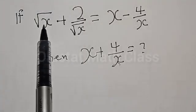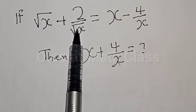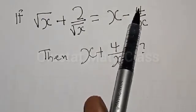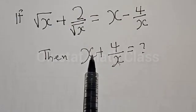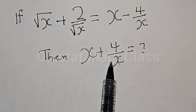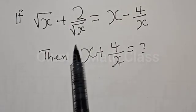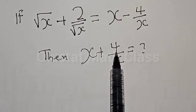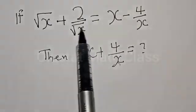If square root of s plus 2 divided by square root of s is equal to x minus 4 divided by x, then what is the value of s plus 4 divided by x? Welcome to my class. In today's class we want to look at how we can quickly find the value of s plus 4 divided by x from this given equation.